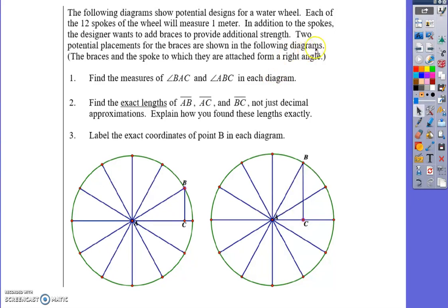In addition to the spokes, the designer wants to add braces to provide additional strength. Two potential placements for the braces are shown in the diagrams. The braces and the spoke to which they attach form a right angle. There are 12 spokes.